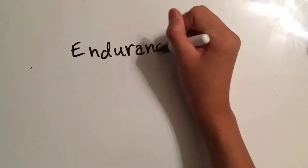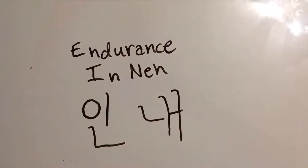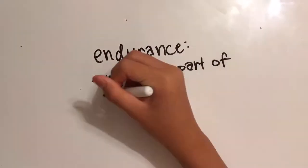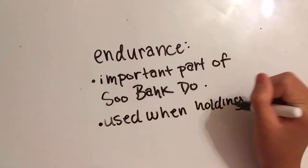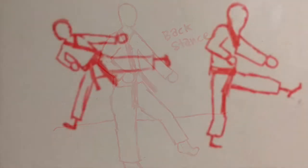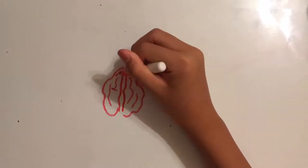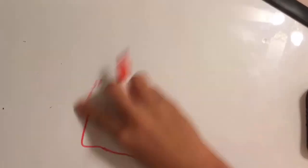Number three, endurance, Inn-nai. Endurance is an important part of Tsubak-do. We use endurance while holding back stances, kicks, and other techniques. Using endurance helps gain mental perseverance and stronger physical aspects.